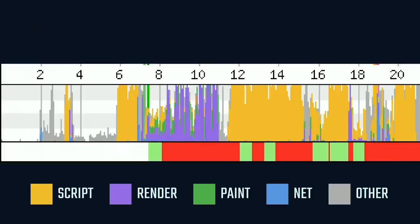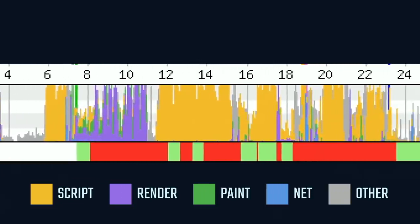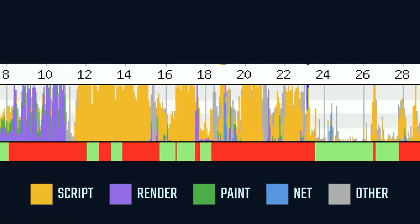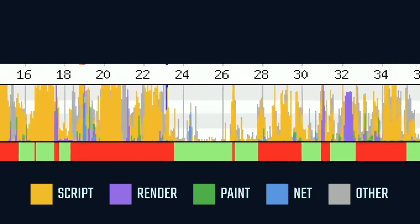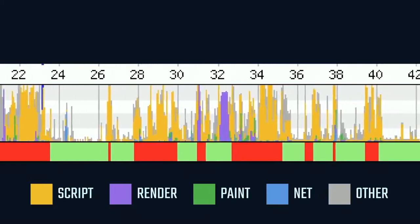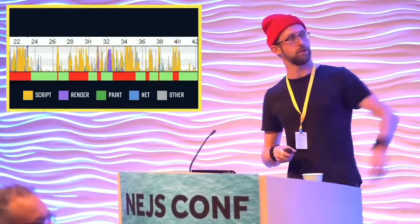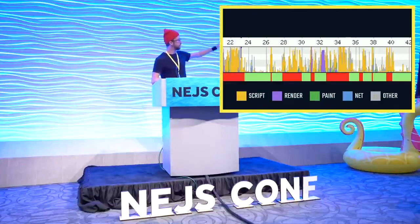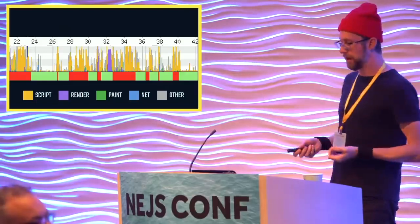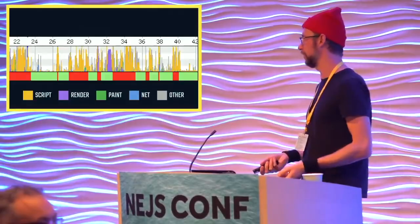That's worth paying attention to, because when devices or networks or both are slow, using the web becomes more difficult. At the bottom of this WebPageTest timeline is a main thread activity indicator. When it's red, the browser can't do anything else. When it's green, it can take on other tasks. And you can see here, for two, four, sometimes six seconds at a time, the main thread is blocked with all this scripting activity, indicated in yellow. You pair this with a slow network on a slow device and you can imagine how tiresome the web really can be for a lot of people.